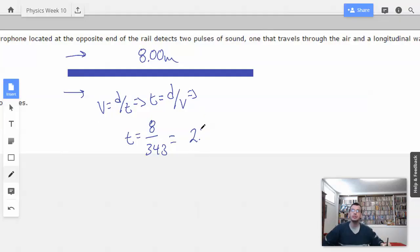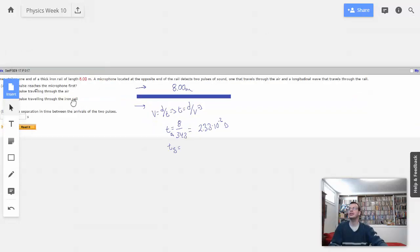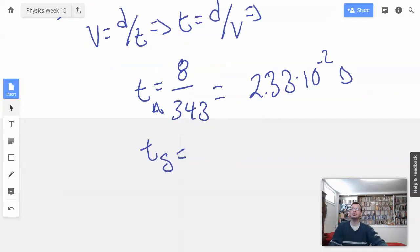So, we got 2.33 times 10 to the negative second. 2.3. No. No. Pen, not eraser. 2.33 times 10 to the negative second. Seconds. Okay. That's pretty good. Now, we need, I'm going to call this TA for air. I'm going to call this TS for steel. Let's say steel or iron. Iron. I probably should do like FE or something. Oh, never mind. Terrible joke. Not worth your time.